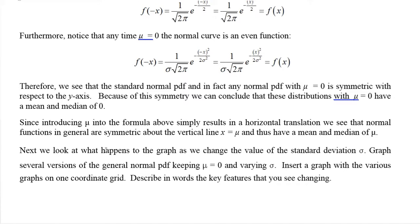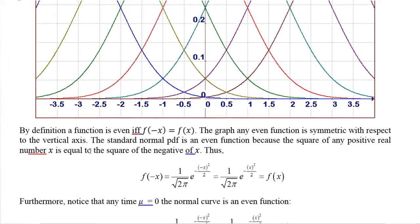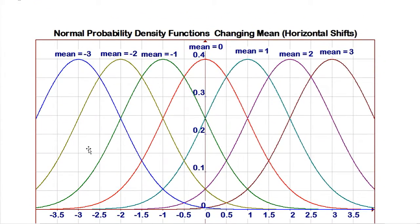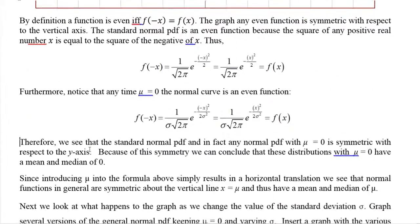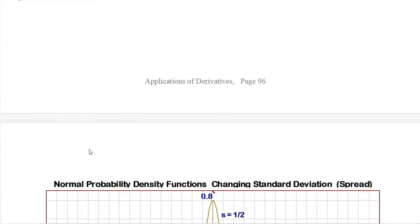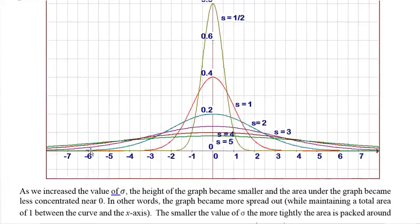Changing mu simply shifts the distribution horizontally. What does changing sigma do?